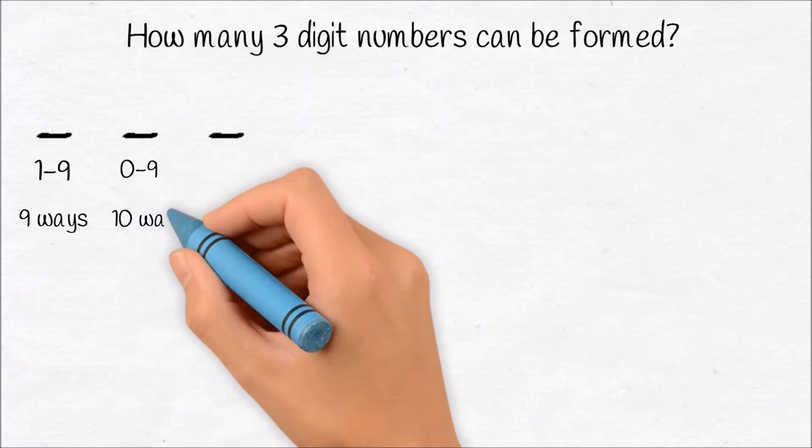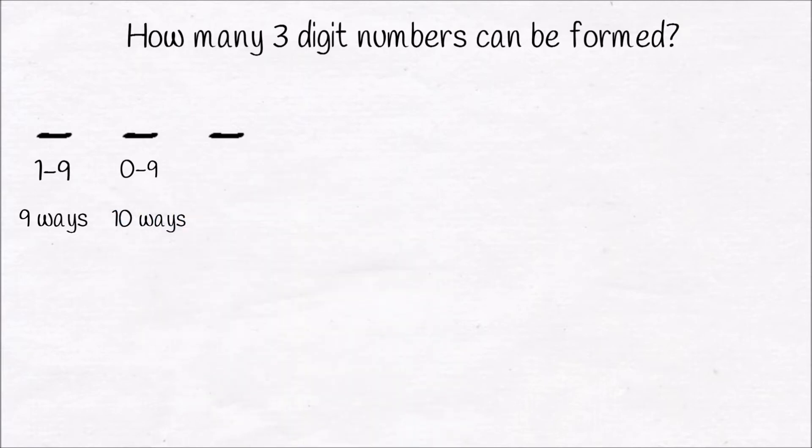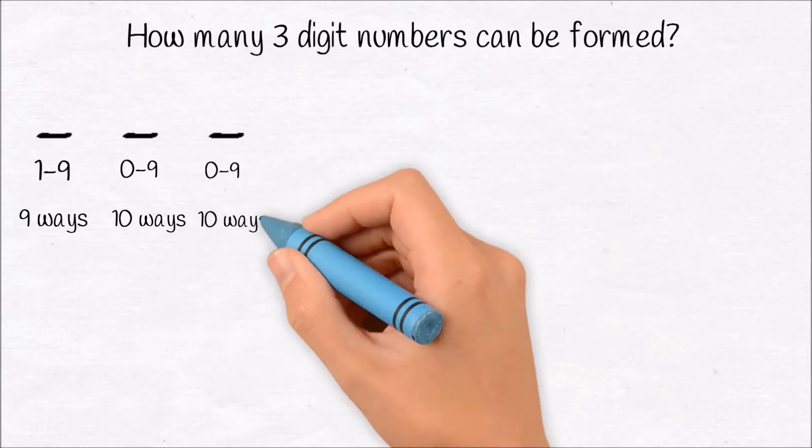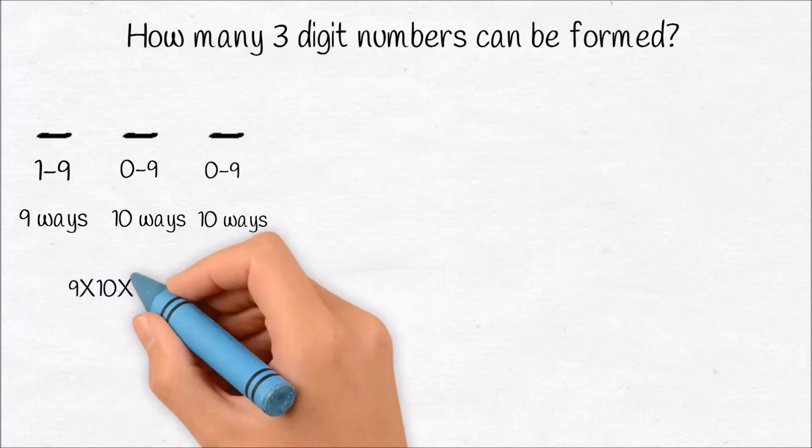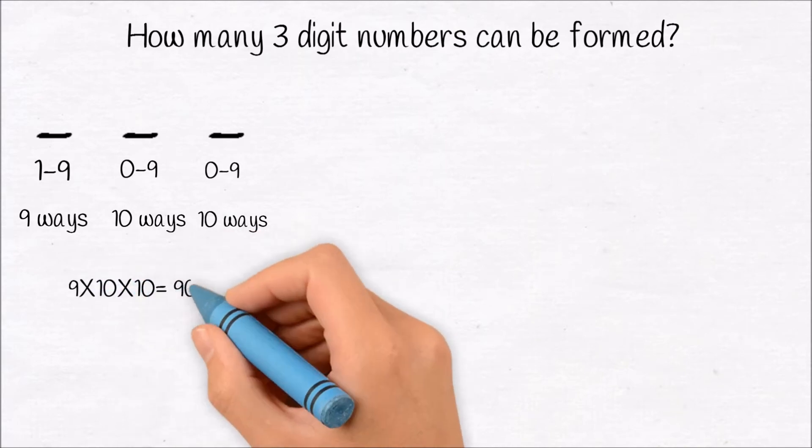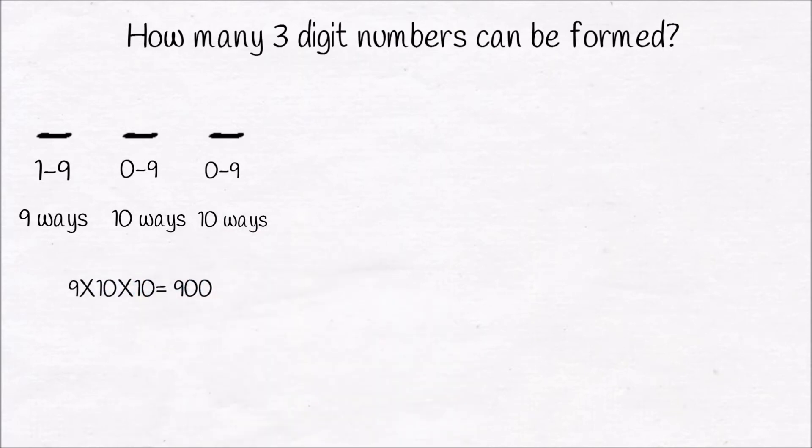And including 0, there are 10 different ways to fill the 10th position, and 10 different ways to fill the unit position. According to FPC, total possible ways are 9 into 10 into 10, which is 900. There are 900 3-digit numbers.